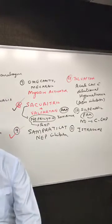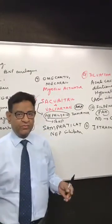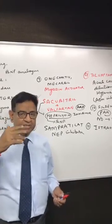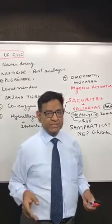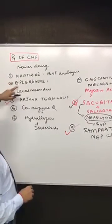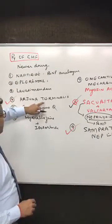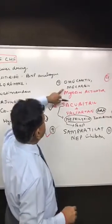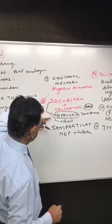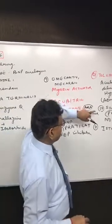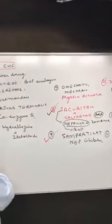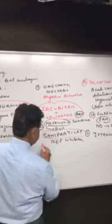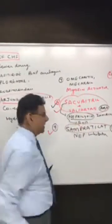Let's have a quick review. Routine drugs: diuretics and nitrates reduce preload; digoxin increases cardiac contractility; ACE inhibitors reduce peripheral resistance. The newer drugs are: nesiritide, eplerenone, levosimendan, Arjuna terminalis, coenzyme Q, hydralazine-isosorbide combination, omecamtiv, mavacamten, sacubitril-valsartan combination, simpatra, tolvaptan, sildenafil, and istaroxime. Of these, several are not given in any book including Harrison, but there is a high chance they will appear in your exam.